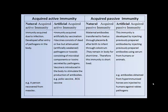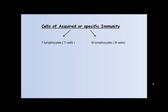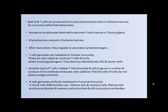Cells of acquired or specific immunity are T lymphocytes (T cells) and B lymphocytes (B cells). Both B and T cells are produced from pluripotent stem cells in red bone marrow by a process called hematopoiesis. Immature lymphocytes destined to become T cells mature in the thymus gland, while B lymphocytes mature in red bone marrow itself. After maturation, they migrate to secondary lymphoid organs. T cells generate cell-mediated or cellular immunity.